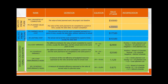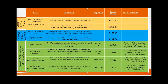Now let's see CPI and SPI. From CV and SV we understand the present project status, but we can also convert CV into an index called CPI (Cost Performance Index) using the equation EV divided by AC. Similarly, SPI (Schedule Performance Index) uses the equation EV divided by PV.